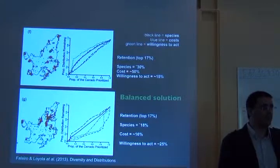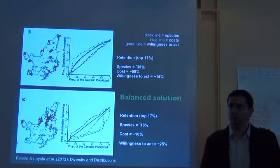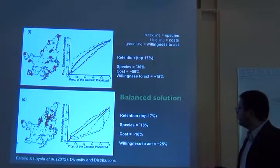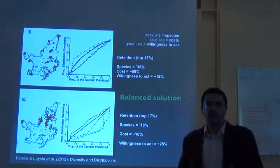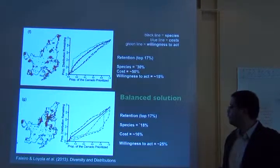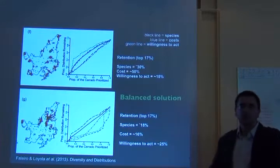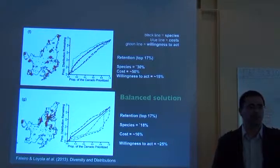Reducing costs and increasing political willingness to act by 25% could mean increasing the chances of the conservation plan actually being established. The good thing is you can compare these performance curves to understand how the variables respond to the level of landscape protection you are targeting.